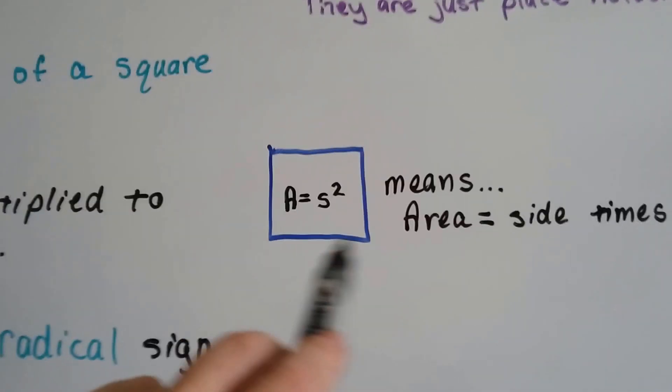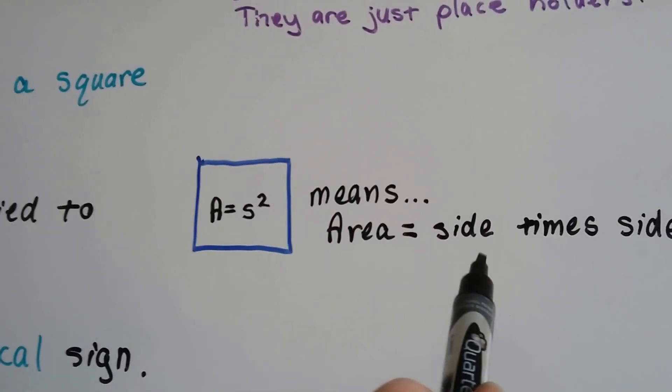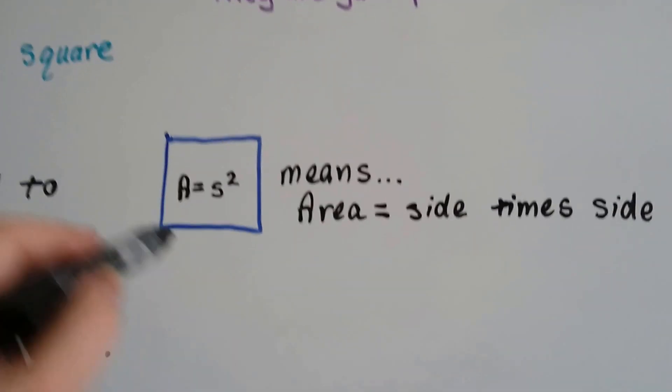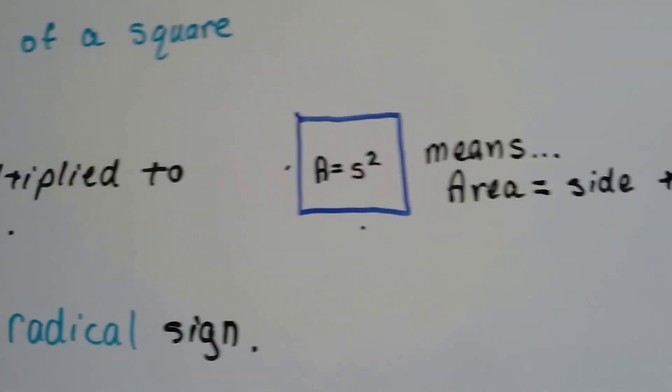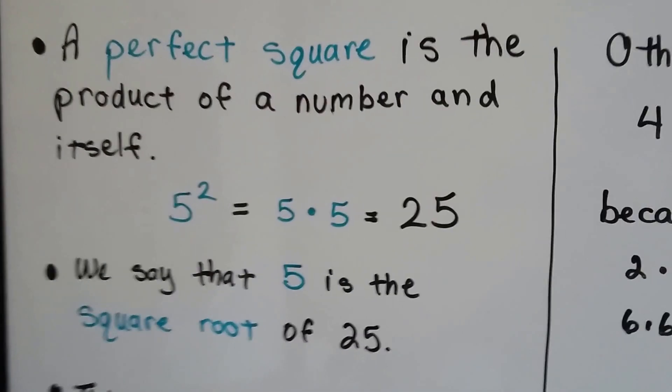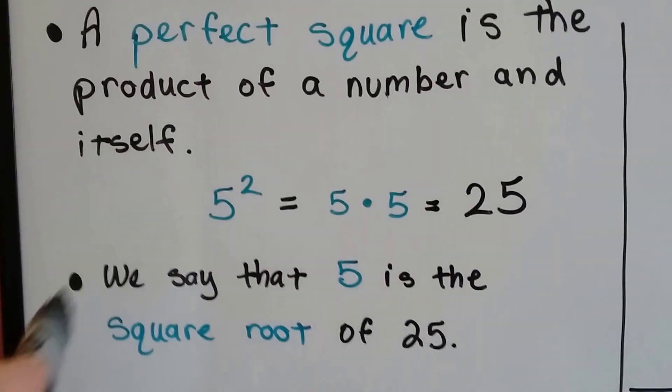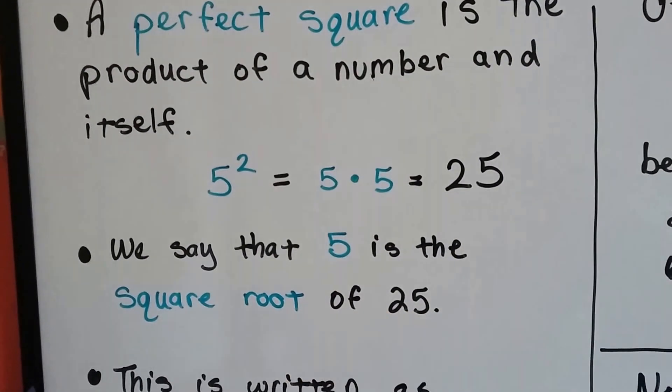The area of this square shape is the measure of its side multiplied to the measure of its side. One of its sides times one of its sides. As we said in the previous video, a perfect square is the product of a number and itself. So 5 squared is equal to 5 times 5 or 25. That's a perfect square.